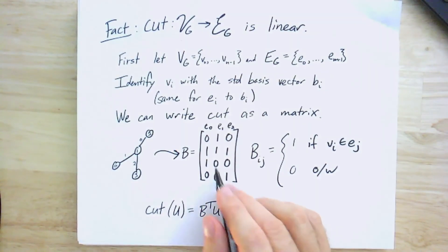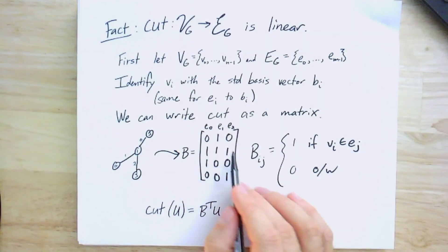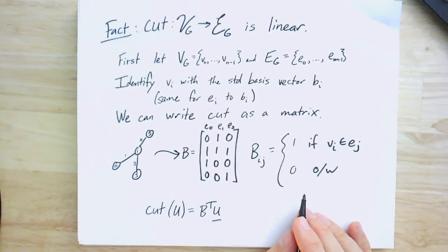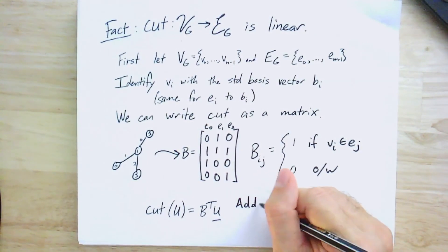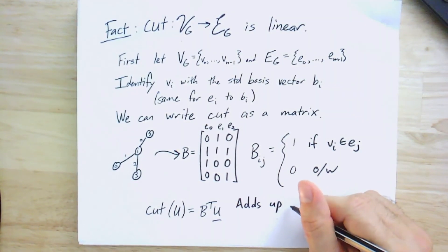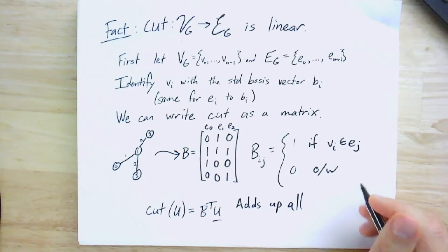And so if I were to apply this matrix, if you look at what's happening, B transpose is going to have columns corresponding to these rows. And these rows are one for each vertex. And they have one entry for every edge incident to that vertex. And so if you add up all of these columns corresponding to a subset of vertices, you're going to add up all the edges incident to a vertex in U. And if an edge has two vertices in U, then it will cancel out because it will be counted twice.